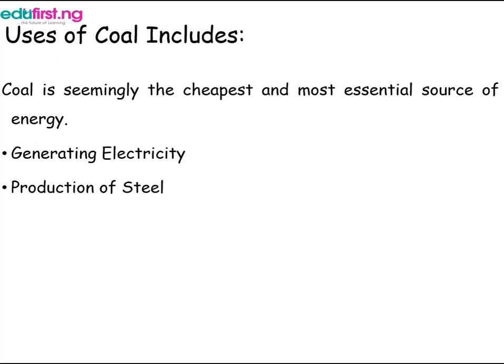The next use is in industry. In industries, coal is used to manufacture several products such as cement, paper, and aluminium. Chemical and pharmaceutical industries also make great use of coal as a raw material, like in coal tar, sulfate of ammonia, chrysoids, and so on.